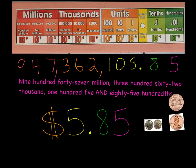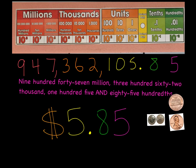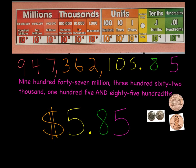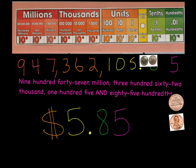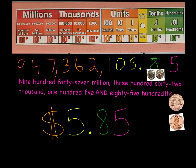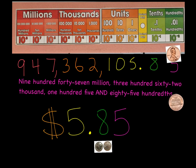Why are dimes called tenths? Pause the video and try to explain this out loud — you need to understand why dimes represent the tenths place. My explanation: it takes ten dimes to equal one dollar, so each dime is one tenth of a dollar. Therefore we call them tenths. If I had one dime, I'd have one tenth; four dimes, four tenths; eight dimes, eight tenths.